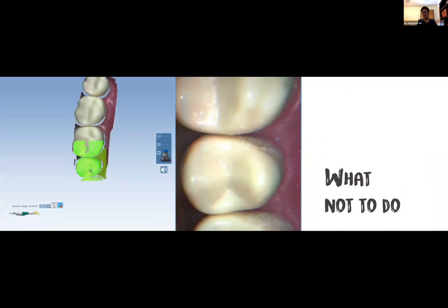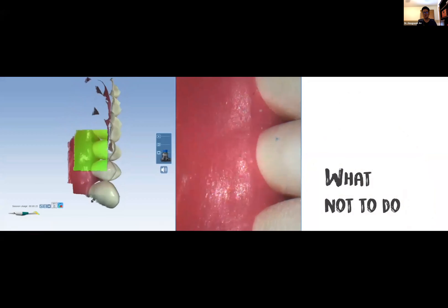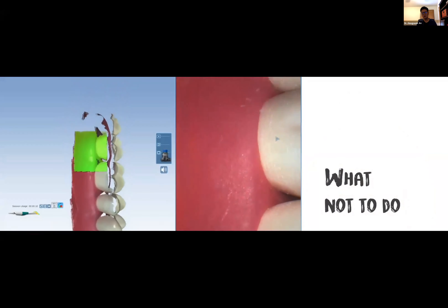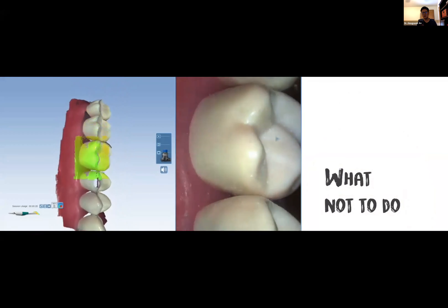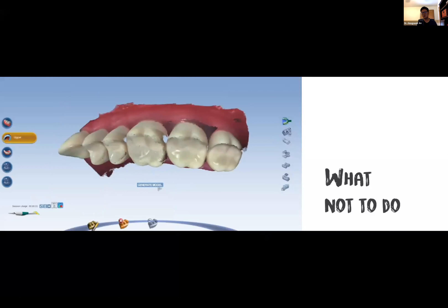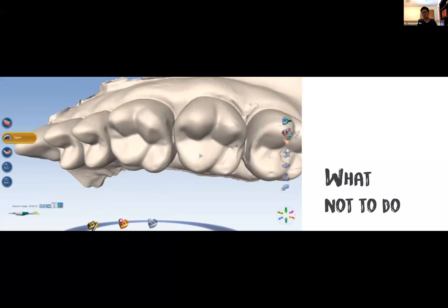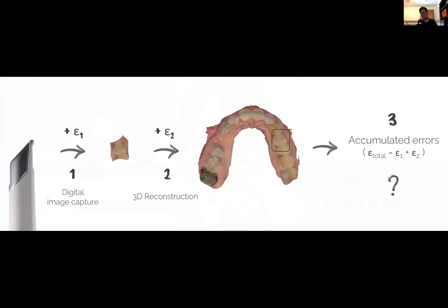Here is an example of what not to do: scanning through the occlusal surface — so far so good — but as I go to the buccal side, my buccal scan does not have a good amount of overlap with my occlusal scan. Now trying to merge them by scanning the missed area between occlusal and buccal surfaces, you can already see that those images were not merged together properly — the occlusal surface is the accurate one and the buccal surface had the error — and the computer couldn't fix that problem. So this is not an accurate scan at all.